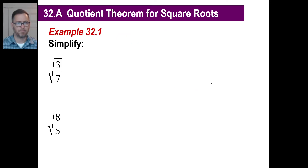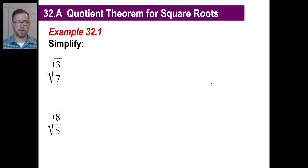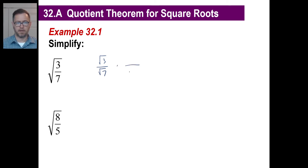Remember those? All right, let's just simplify these two — pretty much a piece of cake here. All we do is write that's the square root of three over the square root of seven. And again, we don't want to leave an irrational number like a square root in the denominator. So we'll just multiply by the square root of seven on the top and the bottom. That gives us the square root of 21 over seven.